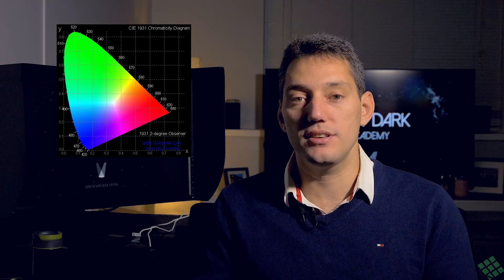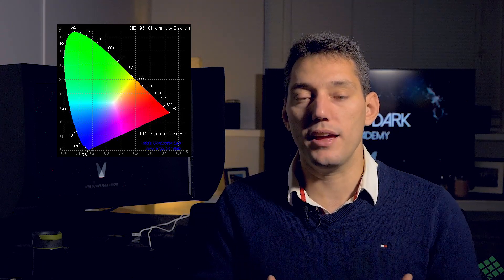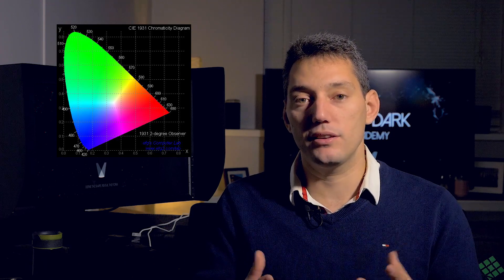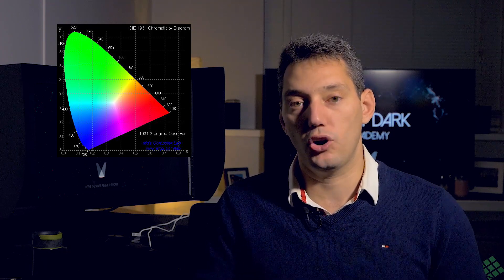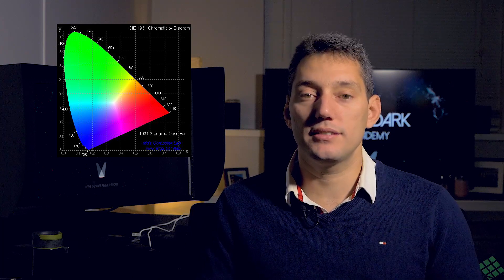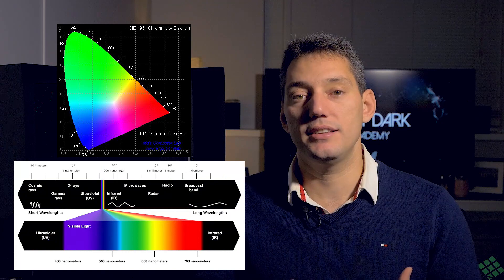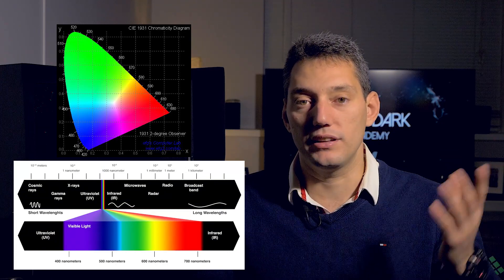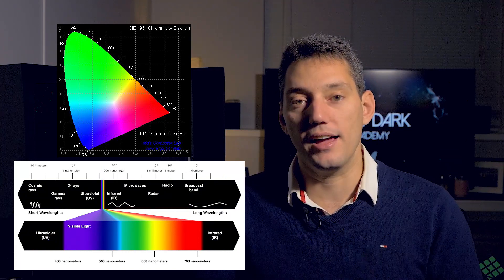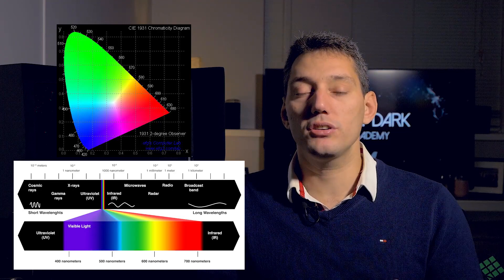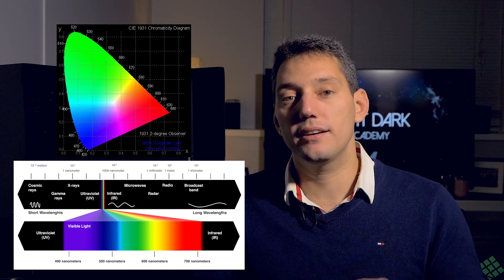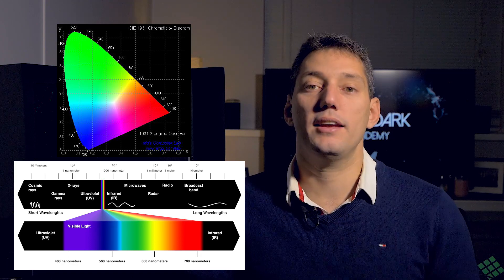In 1931, scientists created the CIE 1931 color space, which is a theoretical color space based on human vision — on the human eye's capabilities of reading and reproducing colors. It is a very large color space based on how the eye reads and interprets the wavelengths of light from the sun in daylight. The primary colors are our rainbow colors and mixing them gives us the colors the human eye can reproduce.